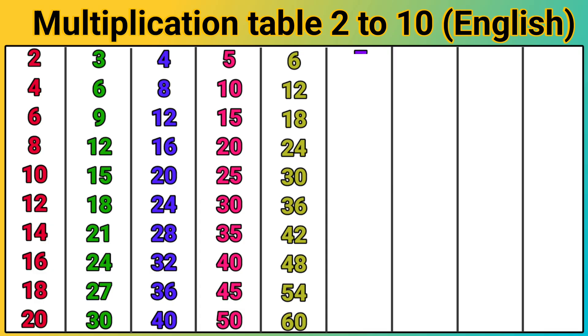7 1's are 7. 7 2's are 14. 7 3's are 21. 7 4's are 28. 7 5's are 35.